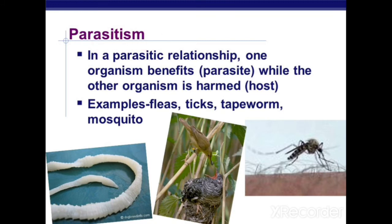The next relationship is parasitism. In a parasitic relationship, one organism benefits — that is called the parasite — while the other organism is harmed — that is called the host. For example, when a mosquito bites us, it sucks our blood and benefits, while we are harmed. The mosquito is the parasite and we are the host. It can cause diseases like malaria and dengue. Examples of parasites include ticks, tapeworms, and mosquitoes.